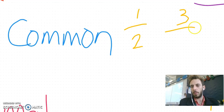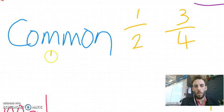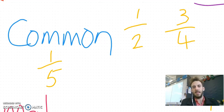One over two, three over four, which is three quarters, one fifth. For it to be a common fraction, it needs to have a smaller number on top and a bigger number underneath.